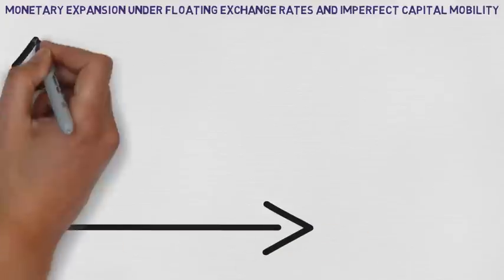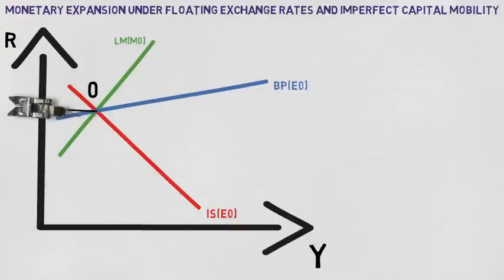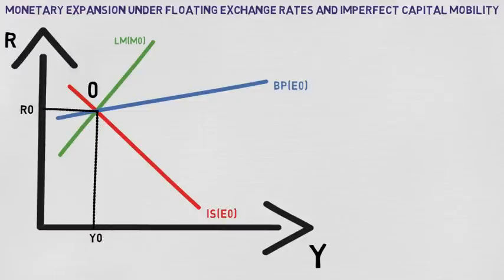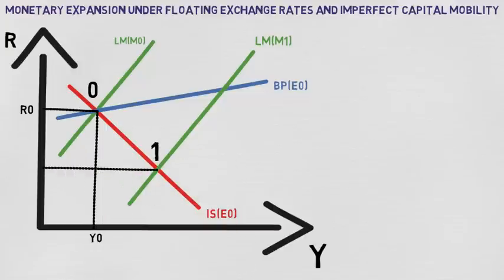So what are the effects of a monetary expansion under floating exchange rates and imperfect capital mobility? We start at point zero, where the balance of payments is at BPE0, and assume that the current and capital accounts are both equal to zero. There is also equilibrium in the closed economy since ISE0 equals LMM0. A monetary expansion means that there is an increase in money supply from M0 to M1, which leads to a shift right in LM from LMM0 to LMM1. We have moved to point one, where there has been a fall in interest rate from R0 to R1, and income has increased from Y0 to Y1. The fallen interest rate means there is a deterioration in the capital account, and the increase in income means there is also a deterioration in the current account. Thus, the balance of payments is now less than zero, and we have moved off the BP line.